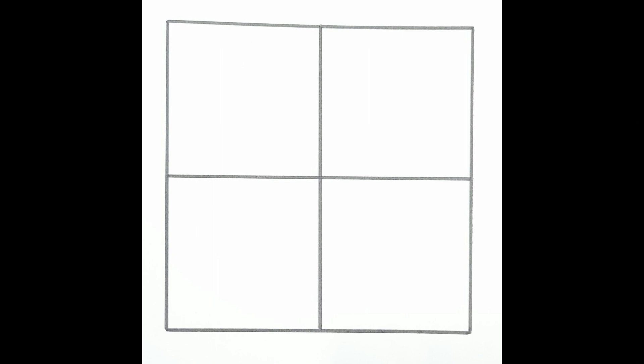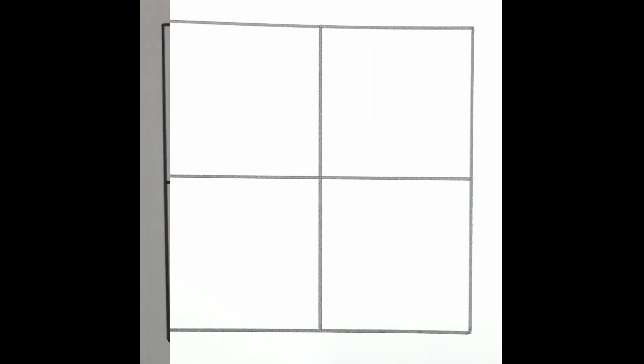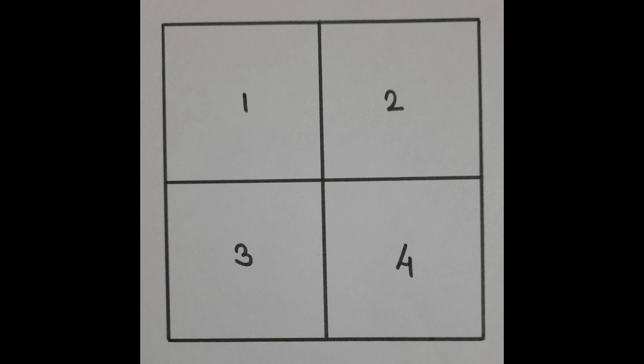Let us start with some simple figures. In this figure, there are four small squares — one, two, three, four. If the question asks how many squares are there, you might say four. But don't forget to count the main square! All four small squares together make one complete square. So the total number of squares here is 5.